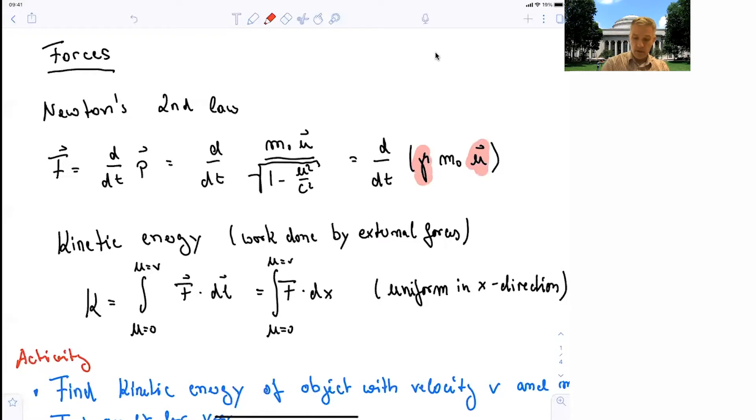The kinetic energy is the work done by an external force. And you can get to the kinetic energy by just integrating from a particle which is accelerated by an external force from a velocity 0 to some velocity v.